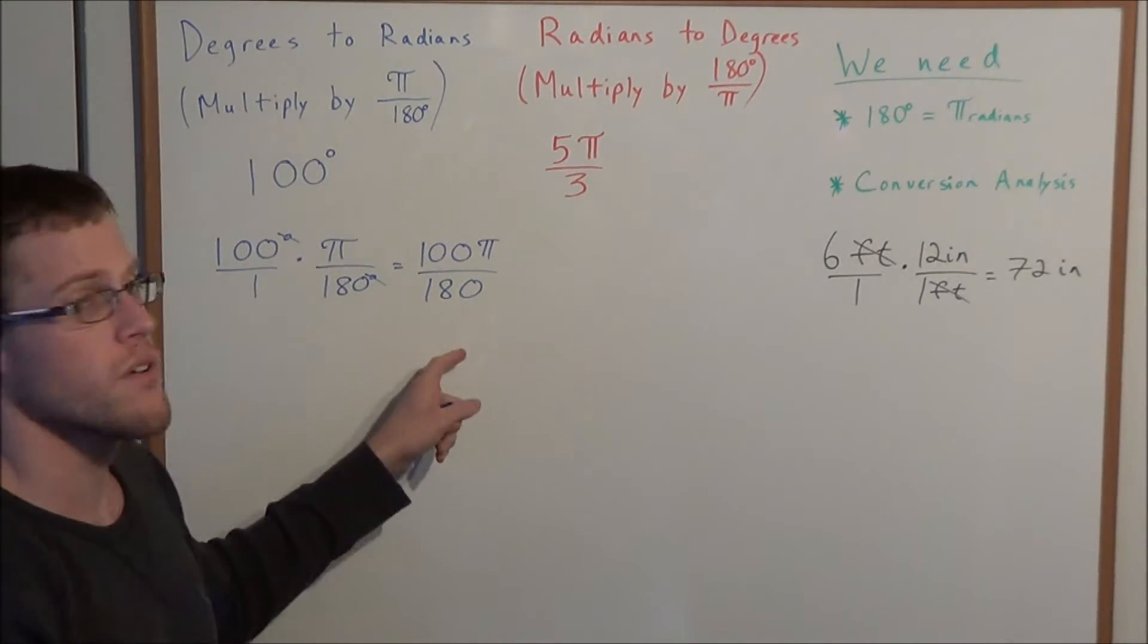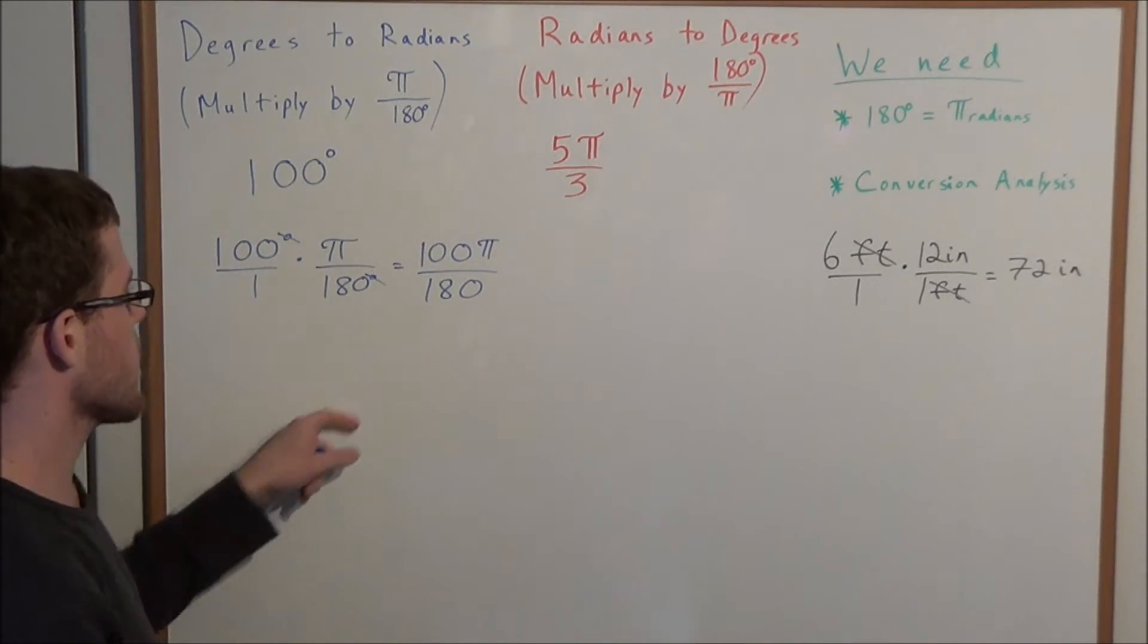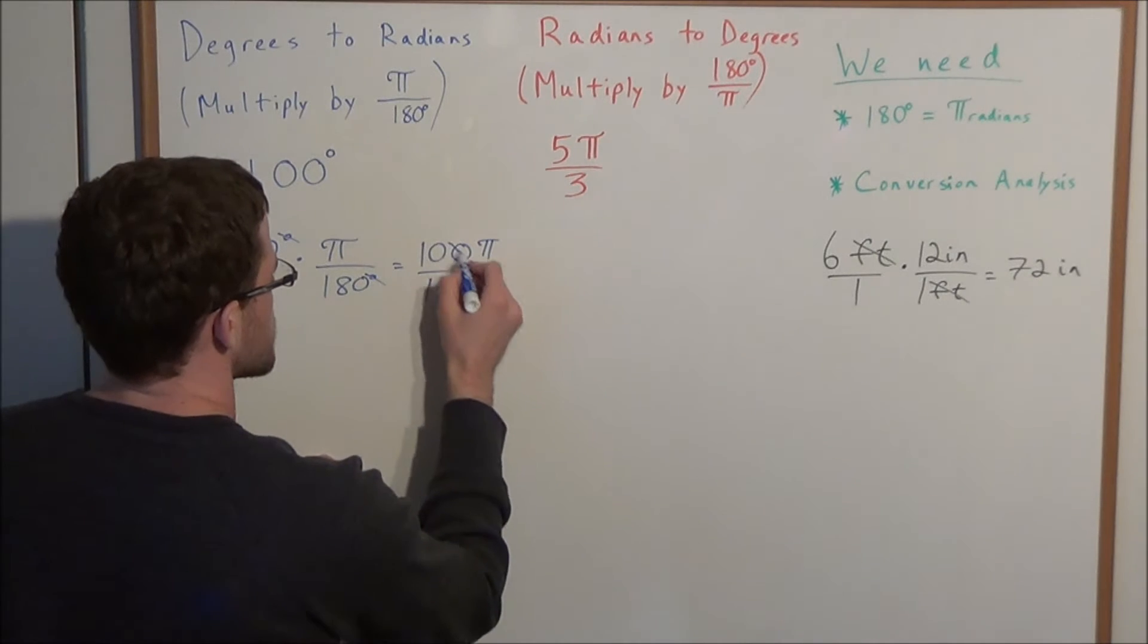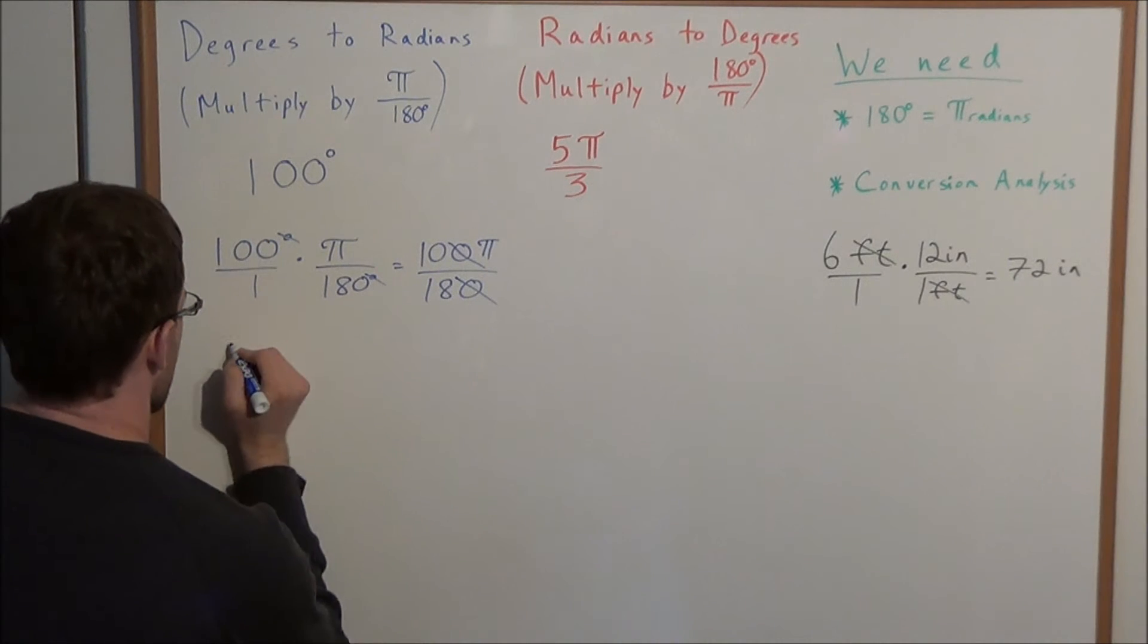And now, what do we need to do? Notice how the degrees canceled out, so now we just need to simplify. The zeros are going to cancel. We have 10π over 18.